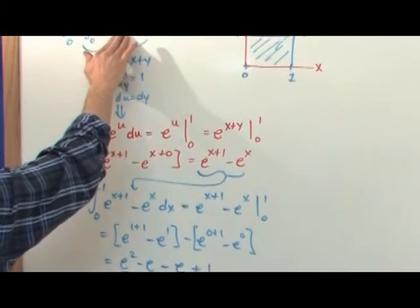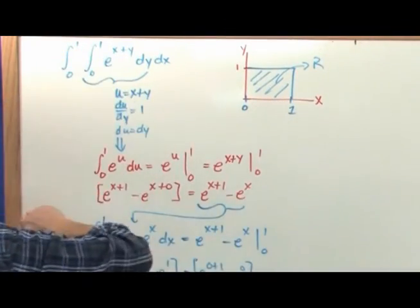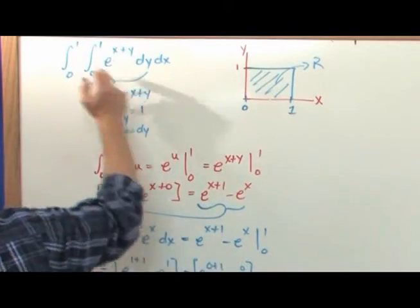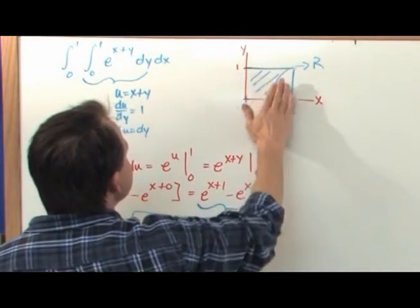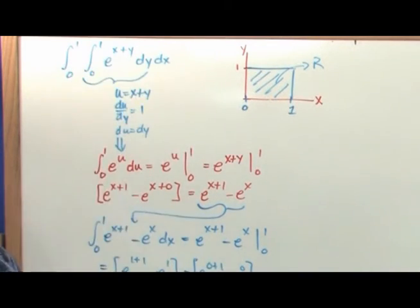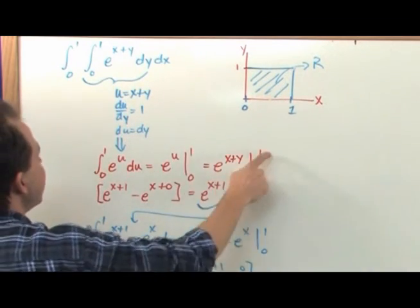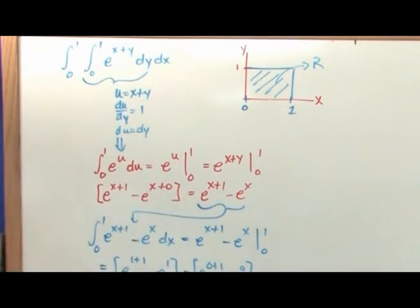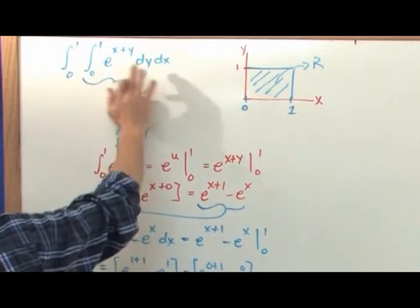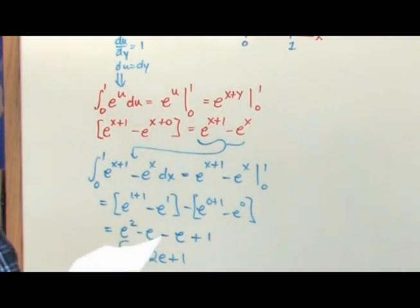So to recap: I had a function of two variables, defined a region in the xy-plane given by the limits of integration, and integrated along y first from one horizontal line to the other, then along x. I integrated dy first holding x constant, used a little substitution, plugged in limits only for y, then took that result and integrated along dx — a regular calculus 1 integral — to get the final answer.